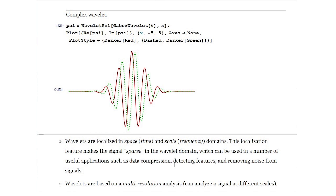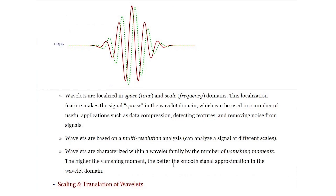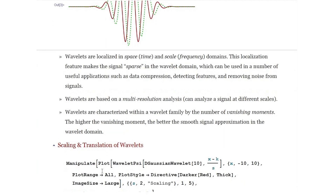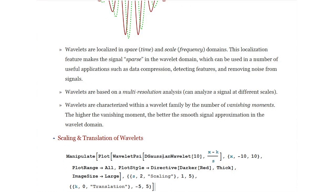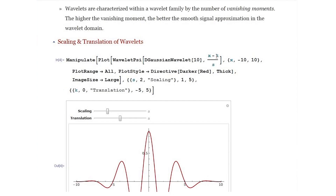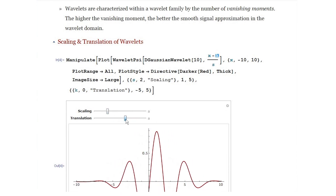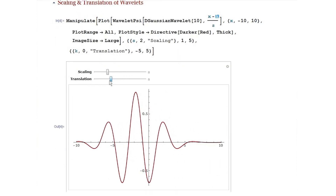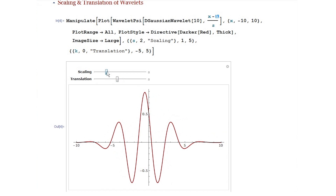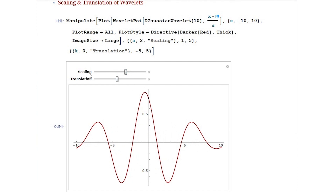In order to perform wavelet analysis and more specifically multiresolution analysis, the wavelets must be scaled and translated. Here is a manipulate that demonstrates how wavelets are scaled and translated, making use of the DeGaussian wavelet of order 10. The translation takes place through a parameter k which is subtracted from the continuous variable x, and you can see that as k is moved, the wavelet moves from left to right. Scaling, on the other hand, makes the wavelet short or large. From these different combinations of scalings and translations, we end up with a series of basis functions used for wavelet analysis.